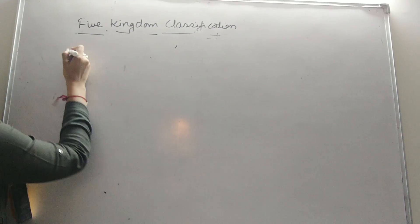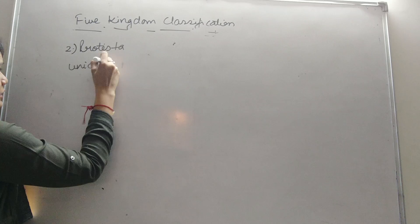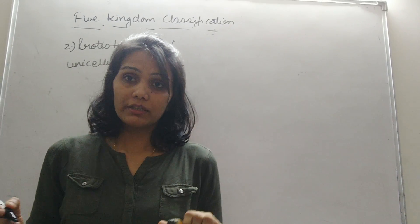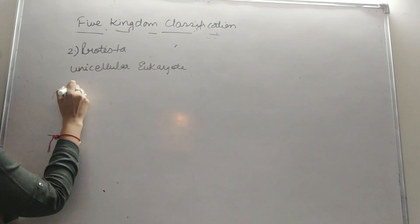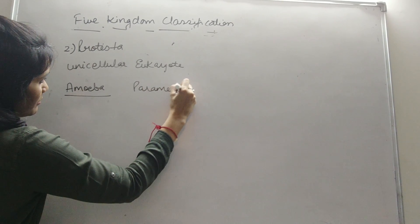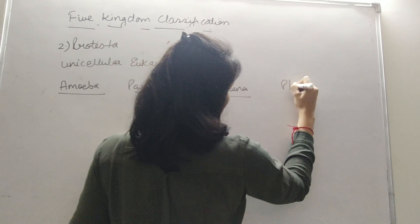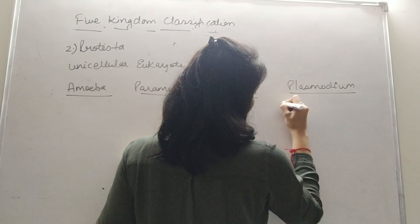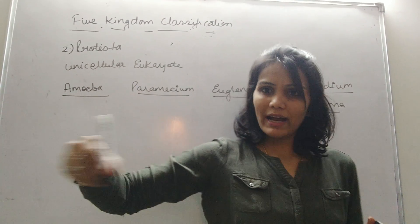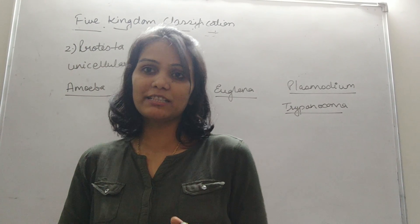Moving to the next kingdom — Protista. It includes all unicellular eukaryotes — single-celled organisms with a well-defined nucleus. Examples include Amoeba, Paramecium, Euglena, Plasmodium, and Trypanosoma. This is a mostly theoretical and diagrammatic topic, so let's go through examples to understand the characters more easily.